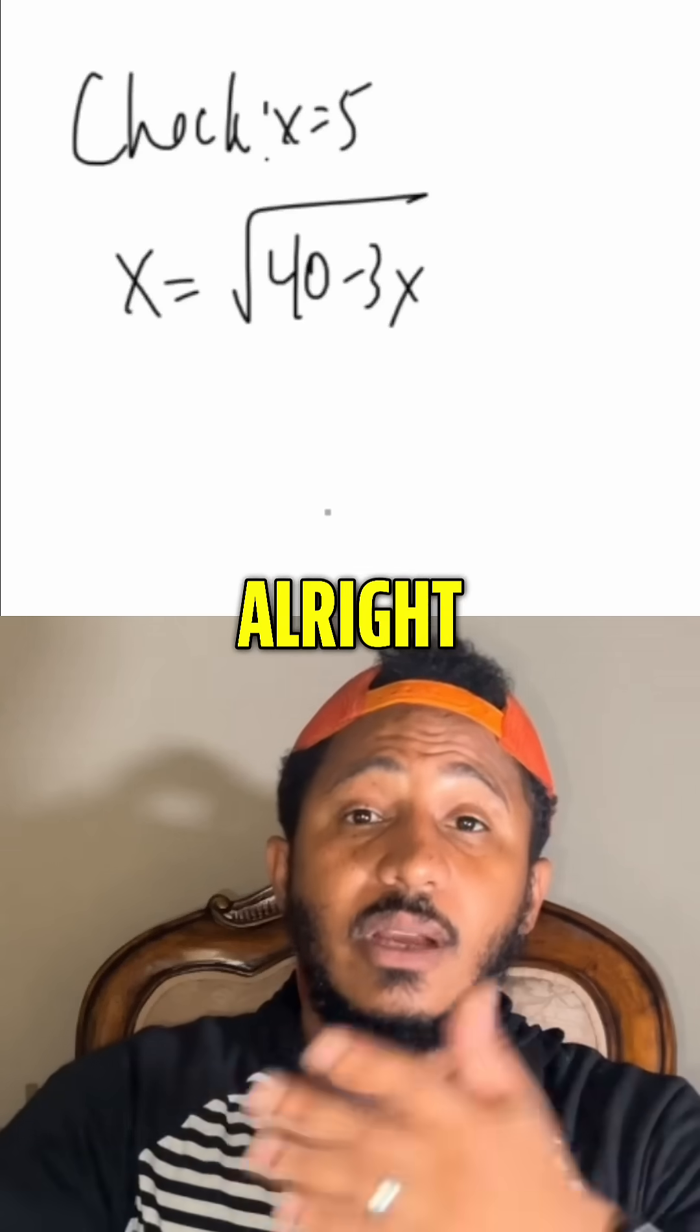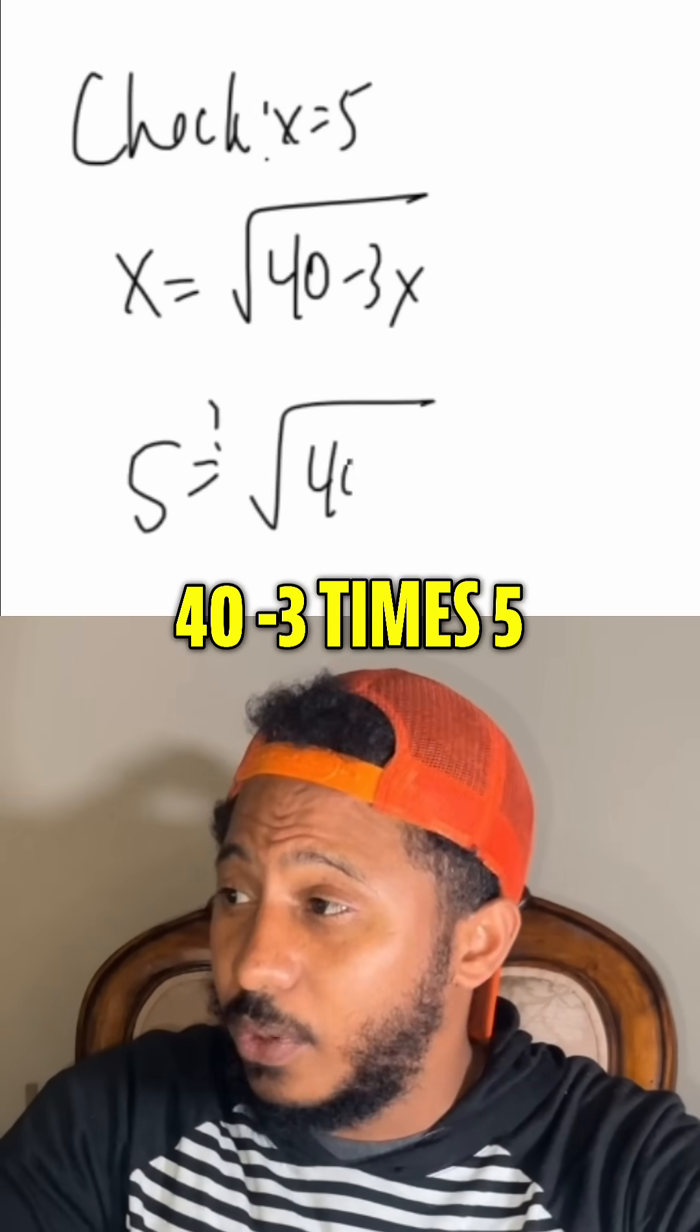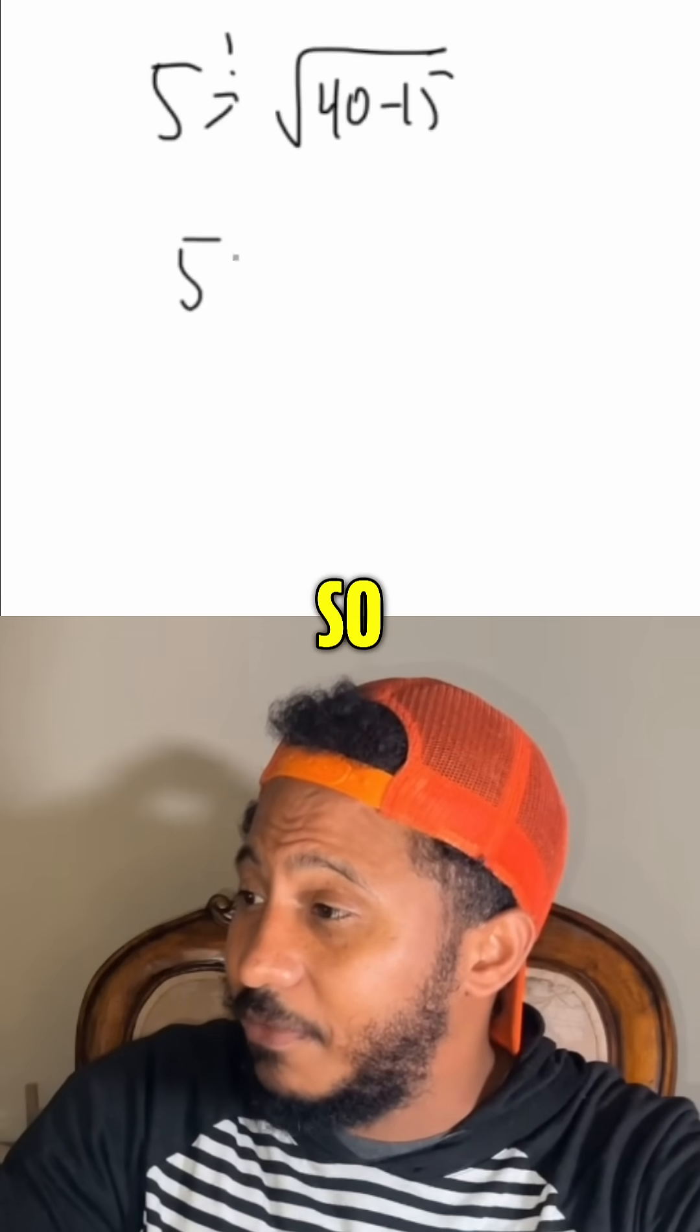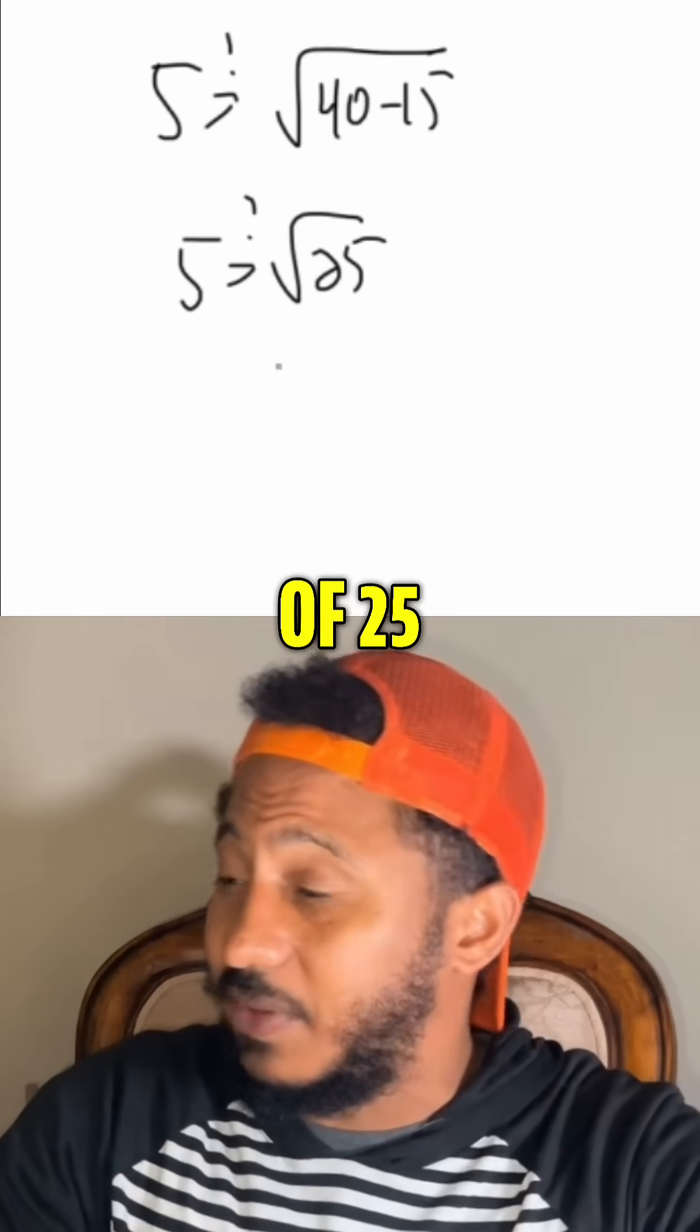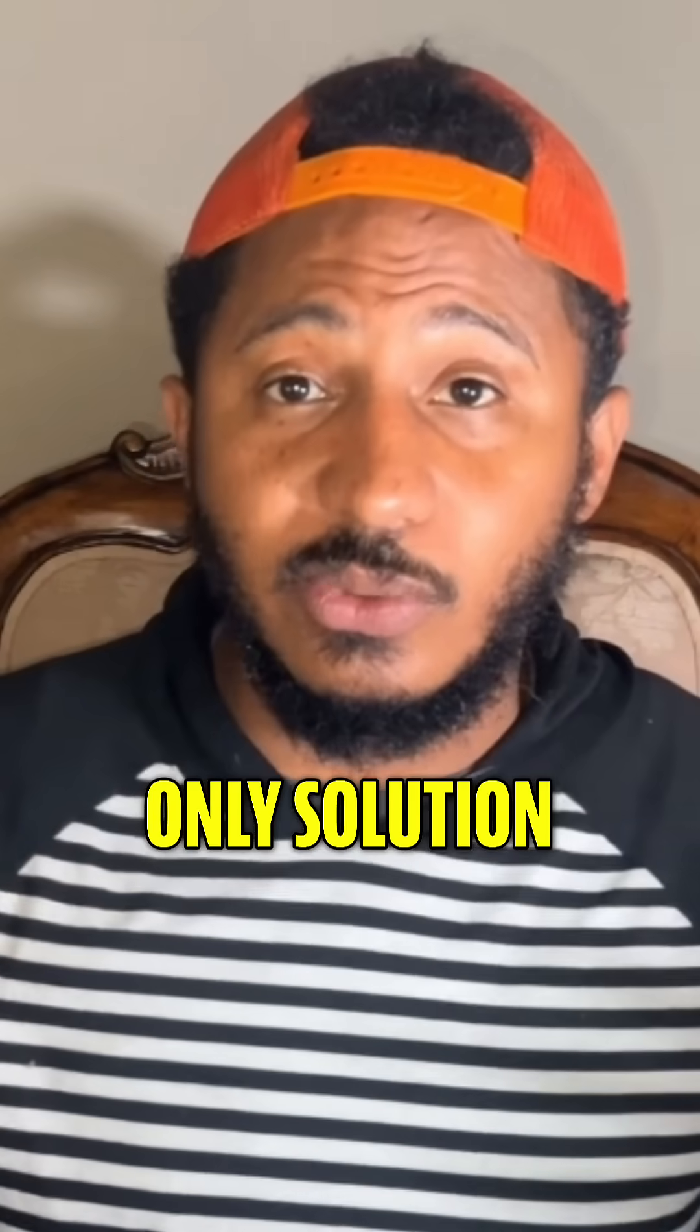Let's check 5. Alright, so we plug in 5. We get 5. Is that equal to the square root of 40 minus 3 times 5? Is this true? Okay, that's 25. So 5. Is that equal to the square root of 25? Again, this is the principal square root of 25. So yeah, 5 equals 5. So 5 would be the only solution to this equation.